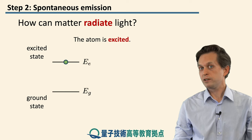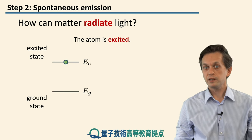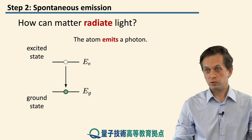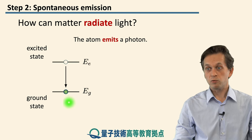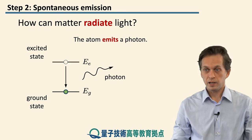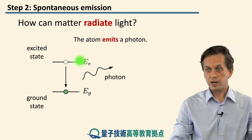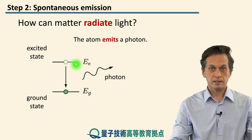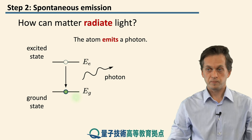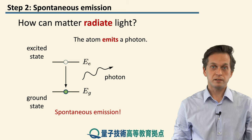When it's there, we'll leave it alone for a while, and at a random time it will spontaneously de-excite, jump back into the ground state, releasing its energy in the form of a photon. The energy of this photon will be given by the energy difference between the excited state and the energy of the ground state. This process is known as spontaneous emission.